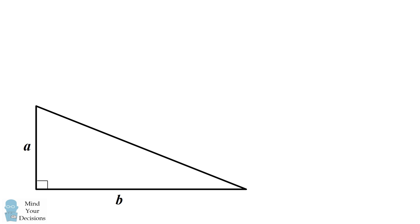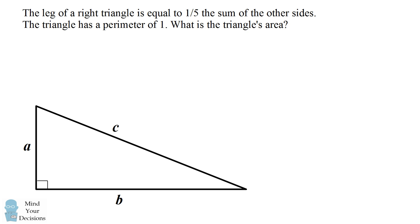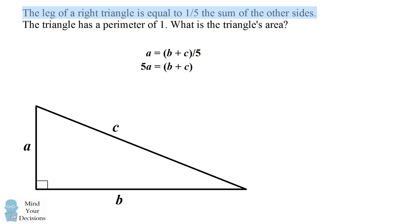We'll solve this problem by setting up a right triangle that has legs A and B and a hypotenuse C. We are told the leg of the right triangle is equal to one-fifth the sum of the other sides, so we write that A equals B plus C divided by 5, or equivalently, 5A equals B plus C. We also know the triangle has a perimeter of 1, meaning A plus B plus C equals 1. Substituting, we solve that A equals one-sixth.